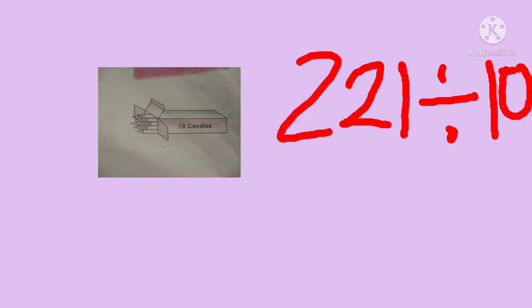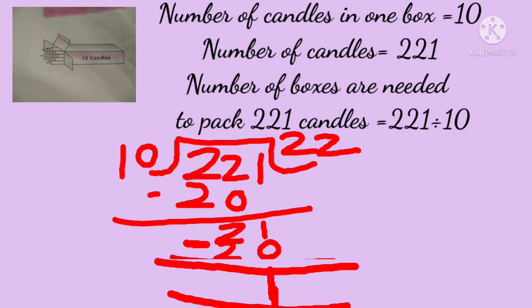We will be dividing 221 by 10. Number of candles in one box is 10. Total candles: 221. Number of boxes needed to pack 221 candles will be 221 divided by 10. The quotient is 22 but the remainder is 1. That means out of 221 candles, only 220 candles can be packed in 22 boxes, and 1 will still remain behind.